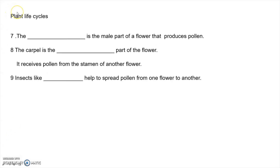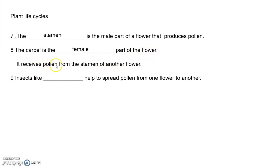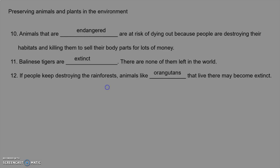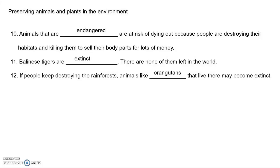Number seven from unit 6.2, plant life cycles: the stamen is the male part of the flower that produces pollen. Number eight: the carpel is the female part of the flower — it receives pollen from the stamen of another flower. Number nine: insects like bees help to spread pollen from one flower to another.